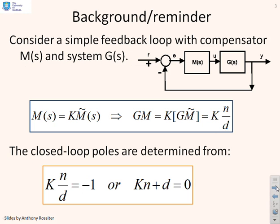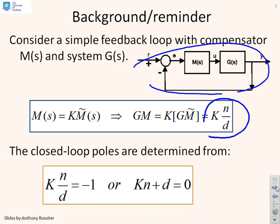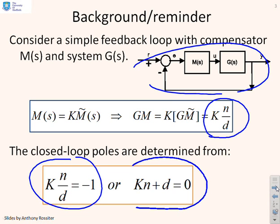So some background, just to remind you of what's going on. We've got a loop diagram like this one here, with a compensator M and a system G, and we're going to write Gm as K times N over D. So we've separated the gain from the dynamics. Now the closed-loop poles can be determined from two expressions: KN over D equals minus 1, or KN plus D equals 0.